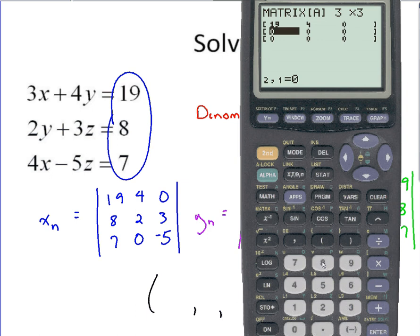So I enter those in. Second row I see 8, 2, and 3. So enter those in. And the last row we've got 7, 0, and negative 5. So double check to make sure everything looks right.